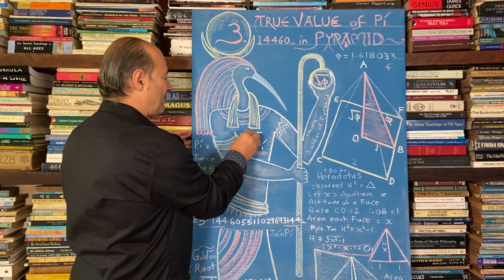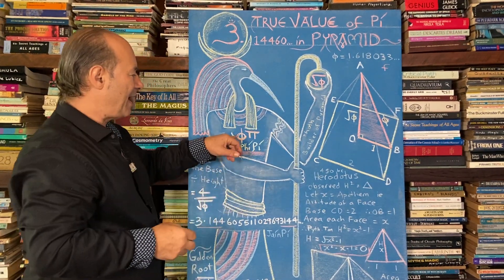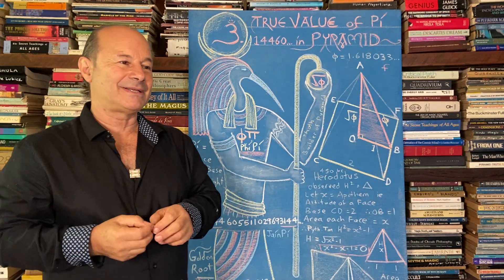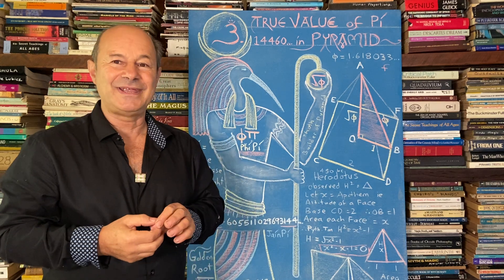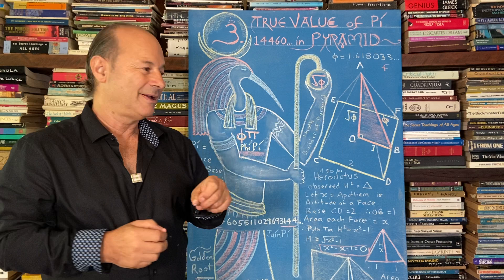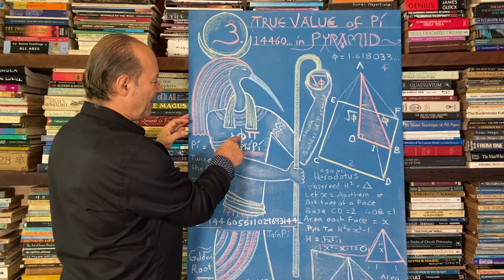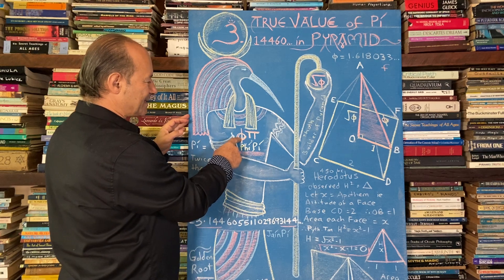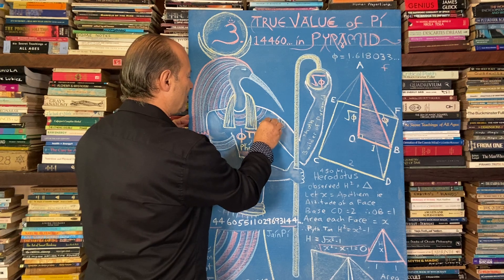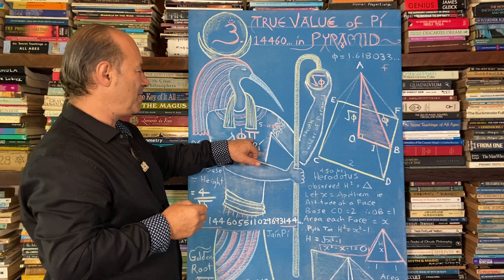When you see the symbol for Phi multiplied by Pi, that is expressed as Phi Pi. I've spent the last 35 years of my life exploring the mystery of Phi Pi — it means Phi times Pi. So if you multiplied Phi, 1.618, times Pi, 3.14, you get approximately 5.088. But which Pi are we using — traditional Pi, or the true value of Pi?